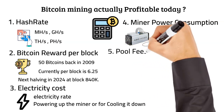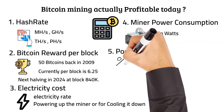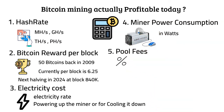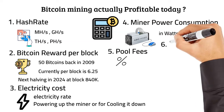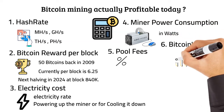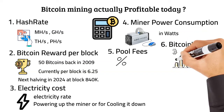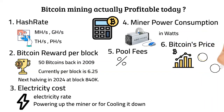Number 5: Pool fees. If you are mining through a mining pool, the pool will take a certain percentage of your earnings for rendering that service. Number 6: Bitcoin's price. Since no one knows what the bitcoin price will be in the future, it's hard to predict if bitcoin mining will be profitable if you are planning to convert your mined BTC into another currency in the future. This variable will have a significant impact on your profitability.